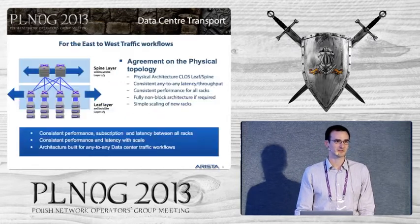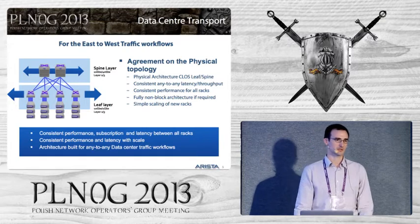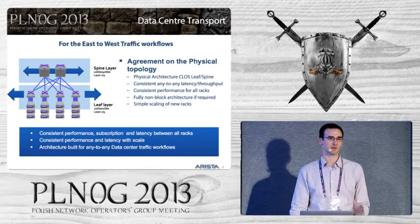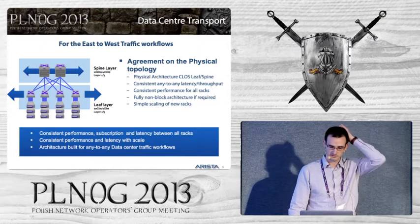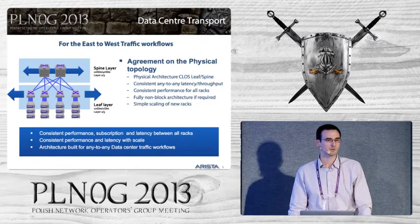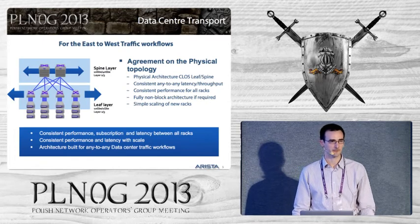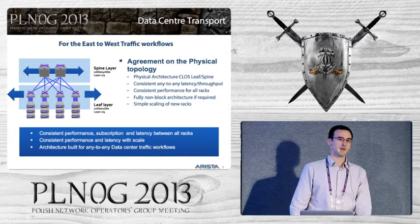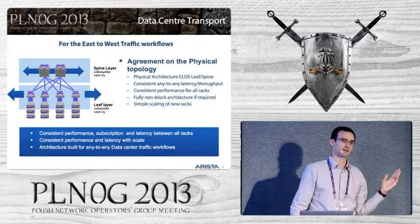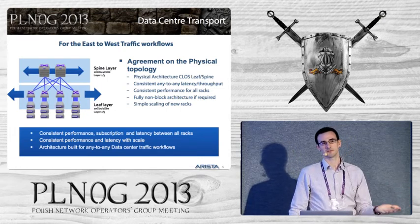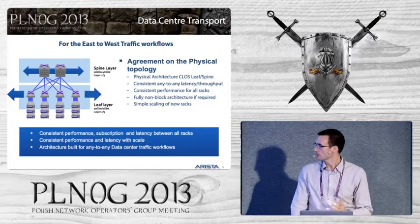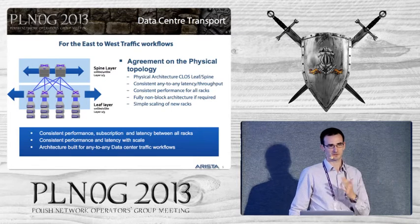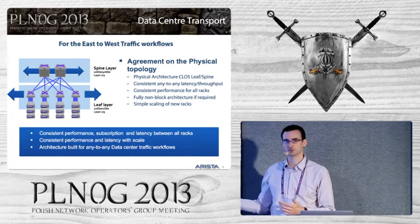The foundation of the next-generation data center is performance — an infrastructure that delivers the required throughput, bandwidth, and other criteria for supporting different applications. The common topology to support that is a Clos topology based on spine and leaf, where the spine is the core and the leaf is the access layer. Your criteria such as port density, port count, bandwidth requirements, and network scale will all be matched with a common equation that results in different architectures, but always following the same Clos topology model.